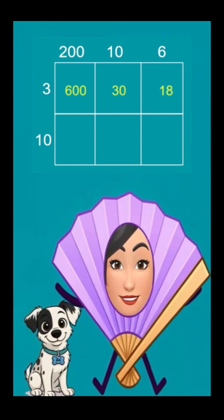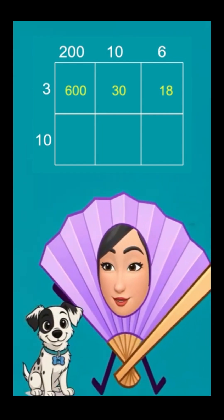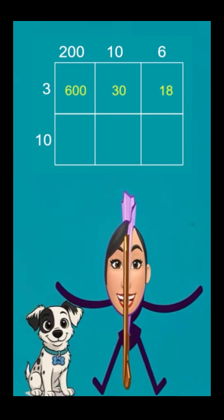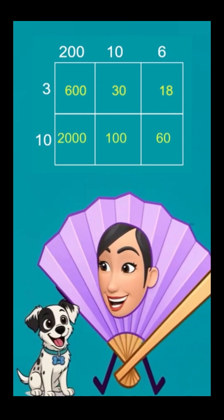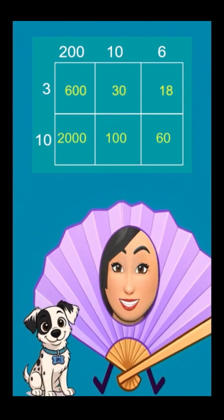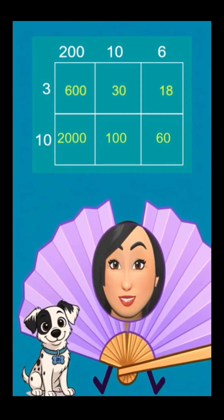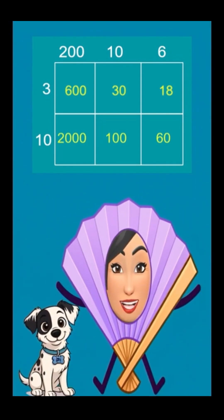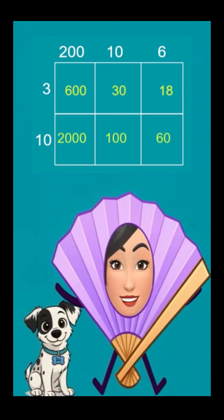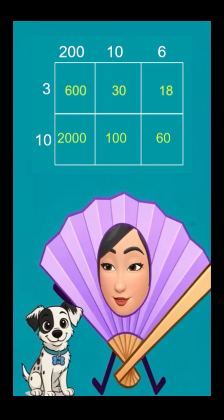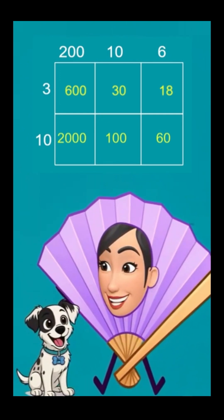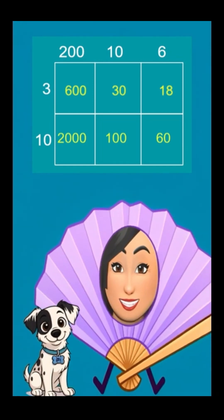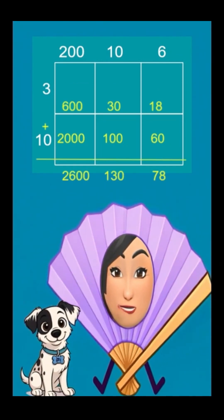In the second row, we would do one times two equals two, and add three zeros. One times one equals one, and add two zeros. Finally, one times six is equal to six, and you add one zero. After we multiply all the numbers, we would then add the numbers together.